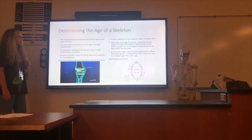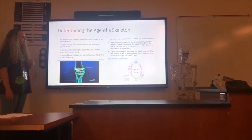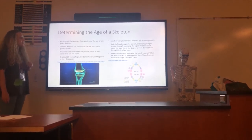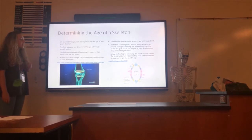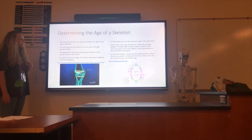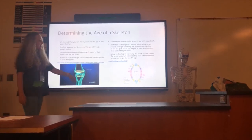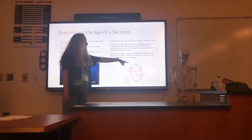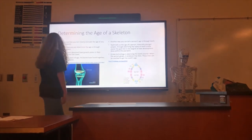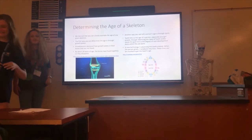Another way you can tell a person's age is through teeth, especially for younger people — by observing the types of teeth visible above the gum line and the degree of root development deep within the jawbone. A new technology is observing the tooth enamel: when the person grows, it produces tiny lines that can be counted to get the tooth's age. You can see the different months and how the teeth grow. That was our forensic anthropology lesson. Thank you all.